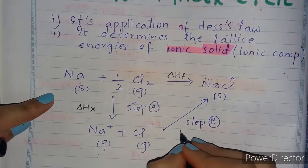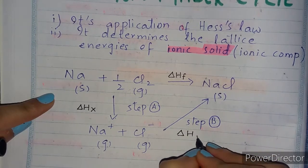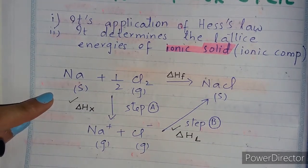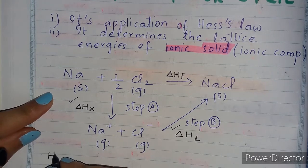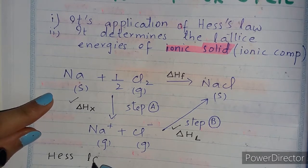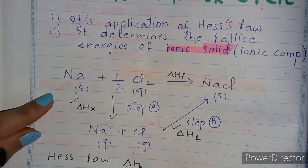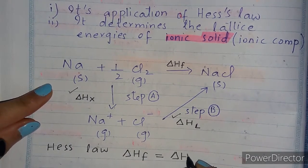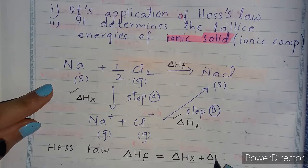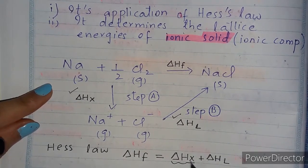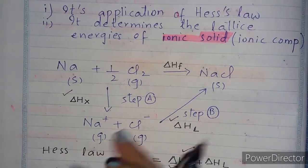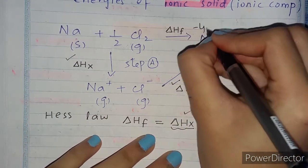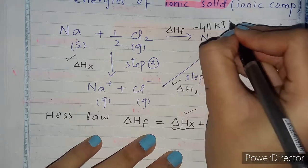In Step A, ΔHX is included, and in Step B, ΔHL (lattice energy) is included. According to Hess's Law: ΔHF = ΔHX + ΔHL. We can find ΔHF easily from Step 1 — its value is minus 411 kJ/mol.